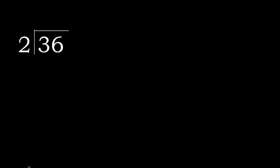36 divided by 2. 3 is not less, therefore with 3 — 2 multiplied by which number is nearest to 3 but not greater? 2 multiplied by 2 is 4, but 4 is greater.